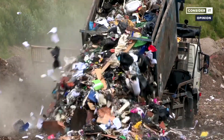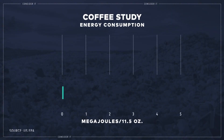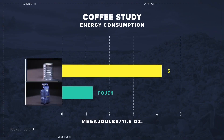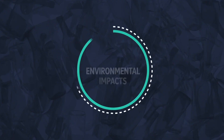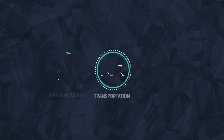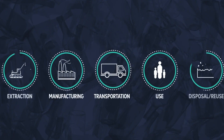The actual answer is the third option, the plastic metal bag. This is because it takes the least amount of energy, resources, and water to make that item. Despite it being throw away, it actually is the least impactful material we might use to package coffee. Life cycle assessment can sometimes upend our assumptions around materials and give us more information than we had previously.